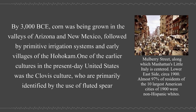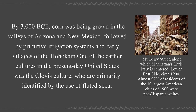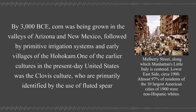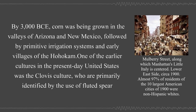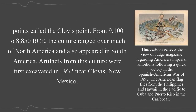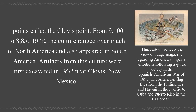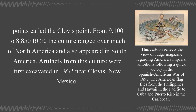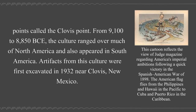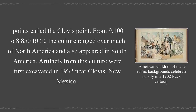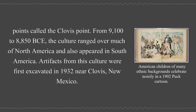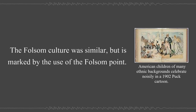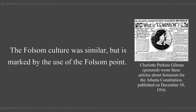One of the earlier cultures in the present-day United States was the Clovis culture, primarily identified by the use of fluted spear points called the Clovis Point, dating from 9,100 to 8,850 BCE. The culture ranged over much of North America and also appeared in South America. Artifacts from this culture were first excavated in 1932 near Clovis, New Mexico. The Folsom culture was similar, but is marked by the use of the Folsom Point.